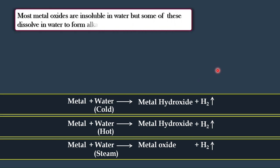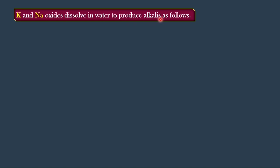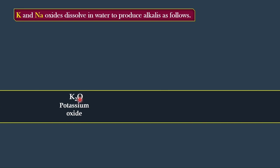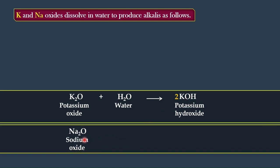Most metal oxides are insoluble in water, but some dissolve in water to form alkalis. These are basic oxides, and when they react with water, a base forms, which is called an alkali. For example, potassium oxide (K₂O) plus water gives potassium hydroxide (KOH), which is alkaline. Similarly, sodium oxide plus water gives sodium hydroxide (NaOH), which is also alkaline.